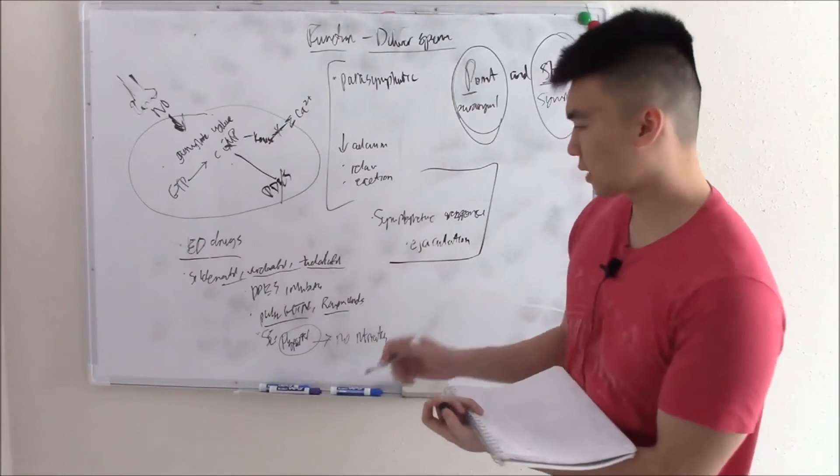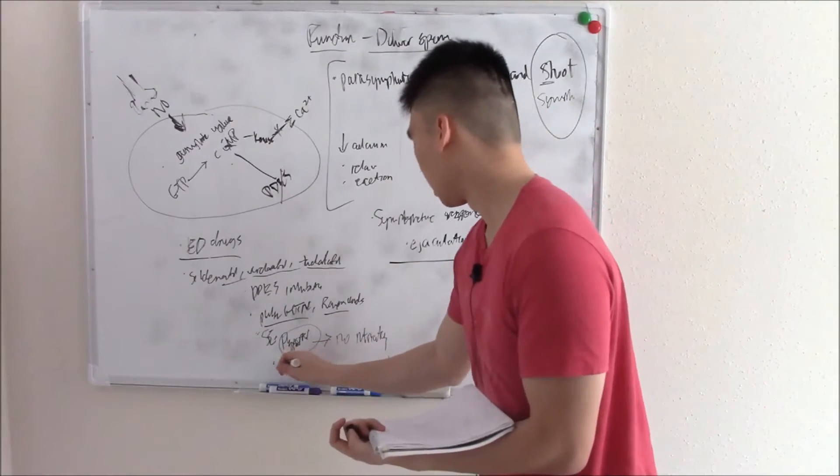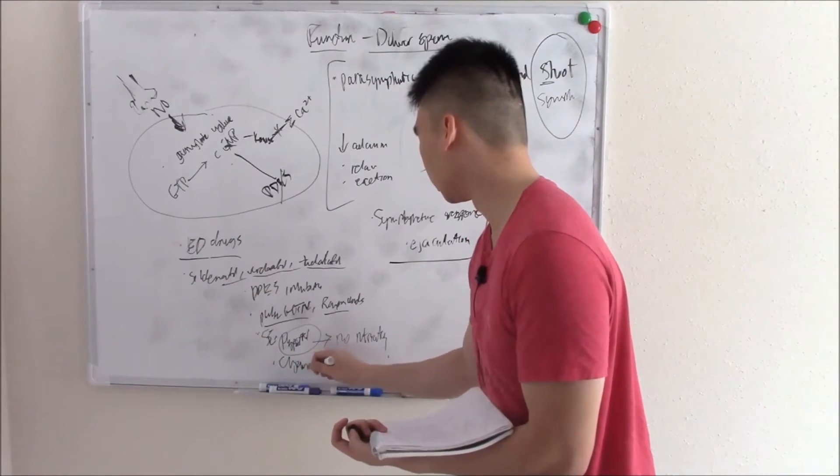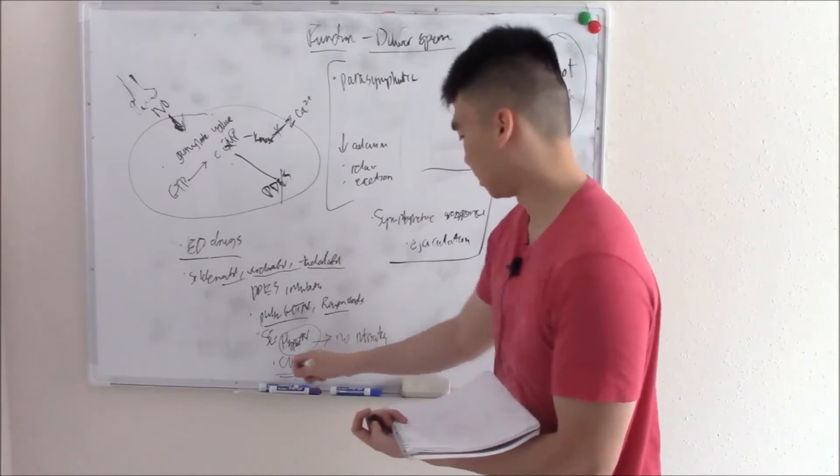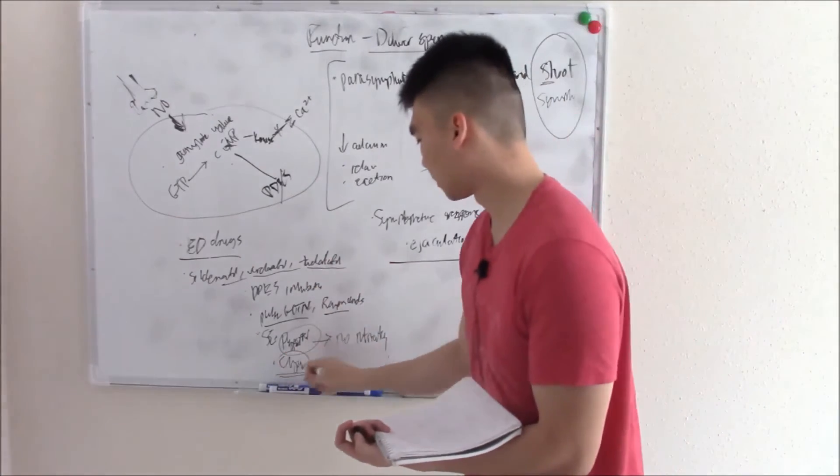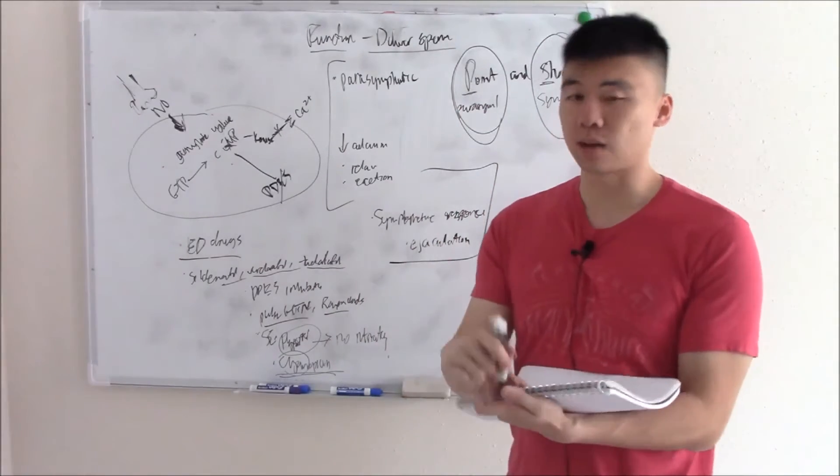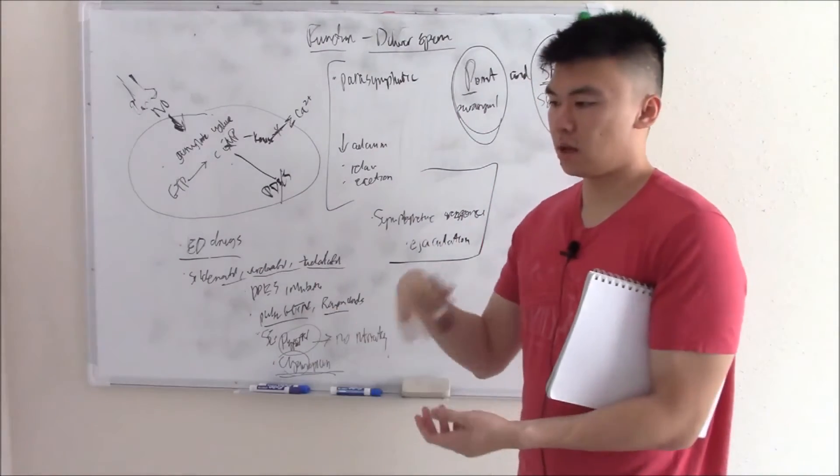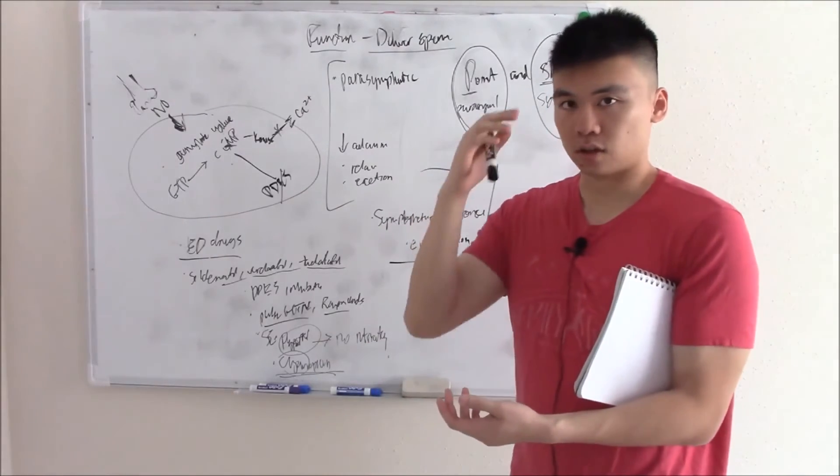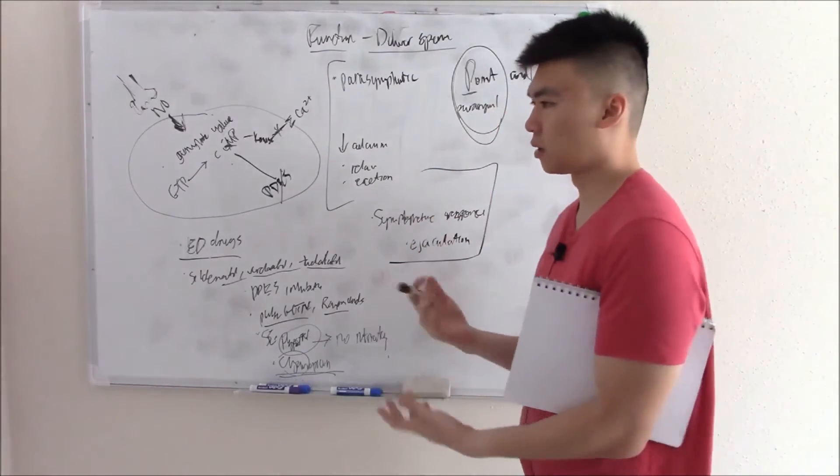Another common side effect that you should know is that it causes blue tinting of the vision. We call that cyanopia. Cyan as in like the color and then -opia as in your vision. So it causes this blue tinted vision. Why it causes that? I'm not quite sure. My theories include sensitization of your retinal rod cells, but that's still up to debate. However, that's a very common symptom.